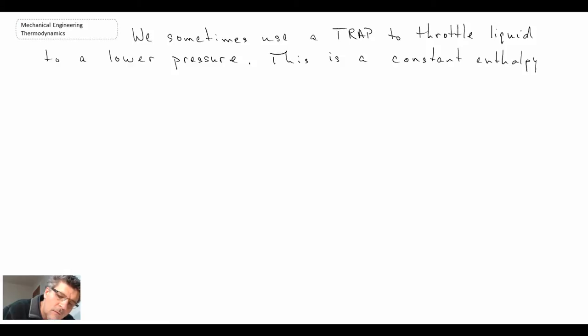So we sometimes use a trap, sometimes also called a throttling valve. Now what we're doing is we're throttling the liquid to a lower pressure. And this is a constant enthalpy process. So what we're going to do, we'll take a look at a process schematic and a process diagram for the closed feedwater heater using a trap.